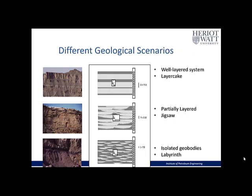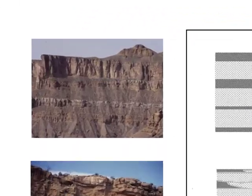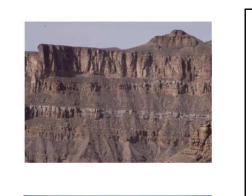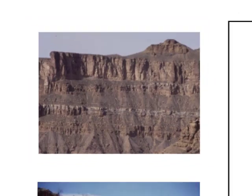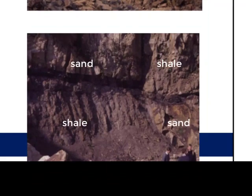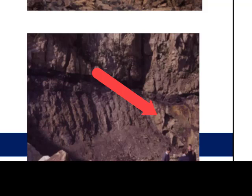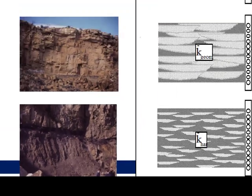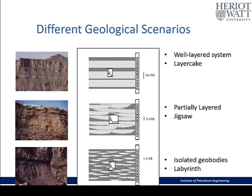To understand the link between the averages and the geology, we consider three very different geological scenarios. At the top we have a well-layered system, a layer cake geometry, where one would expect the arithmetic average. The middle picture shows a partially layered, more jigsaw-type reservoir where sand bodies are interacting in three dimensions around the wellbore, and there we would expect the geometric average. In the lower case we have almost isolated sand bodies, where flow is across the material that lies between them.